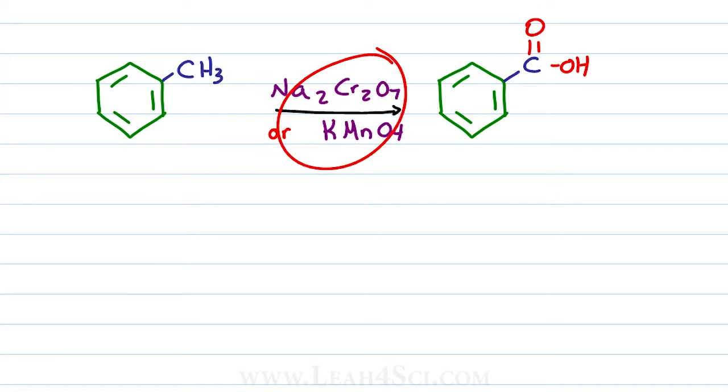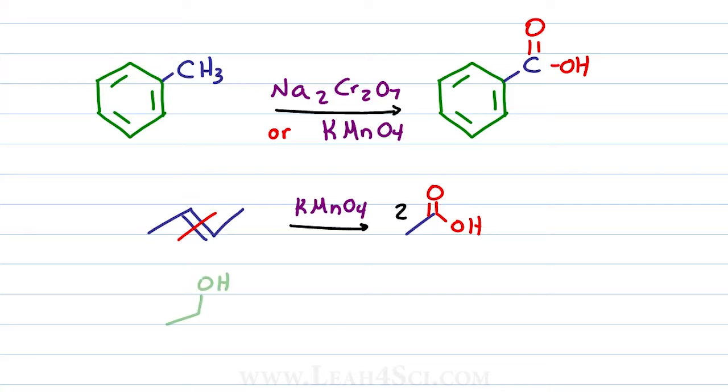You've already seen these oxidizing agents in the past. For example, the oxidative cleavage of an alkene using potassium permanganate to give us two carboxylic acids or the oxidation of an alcohol into a carboxylic acid.